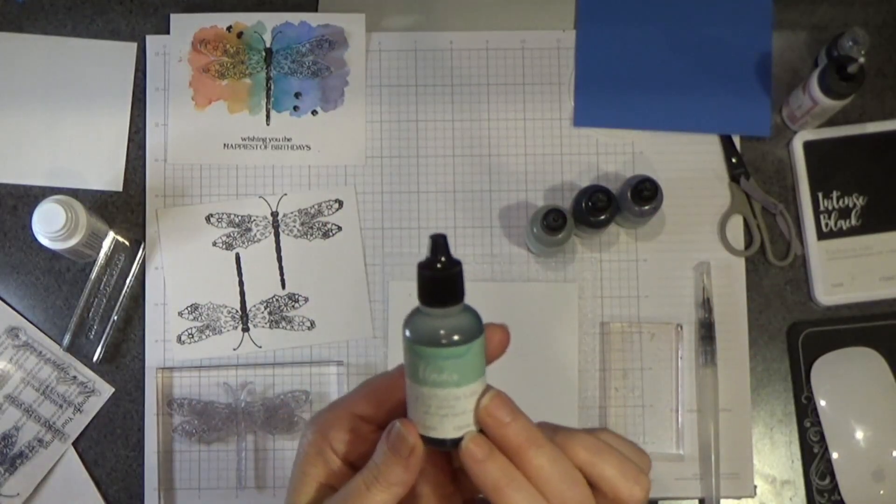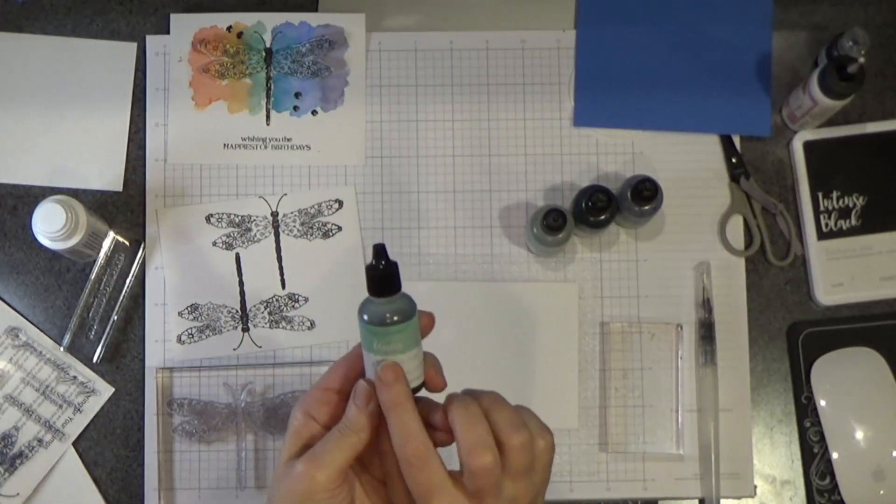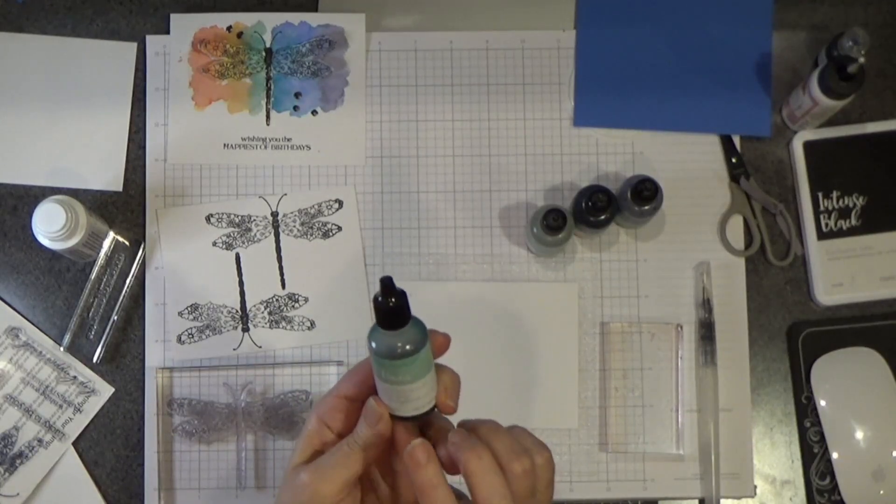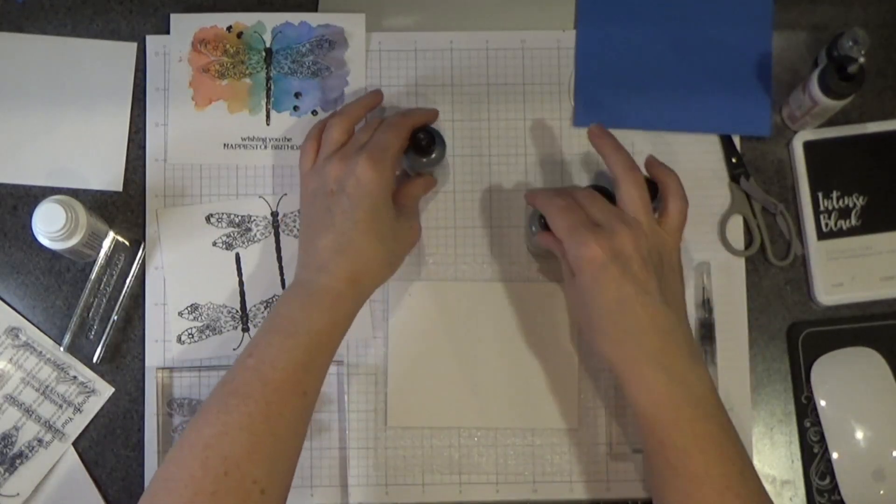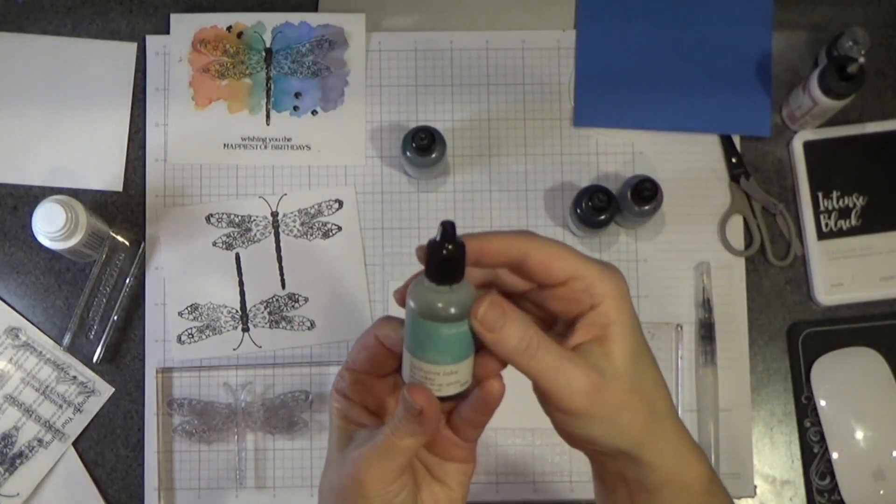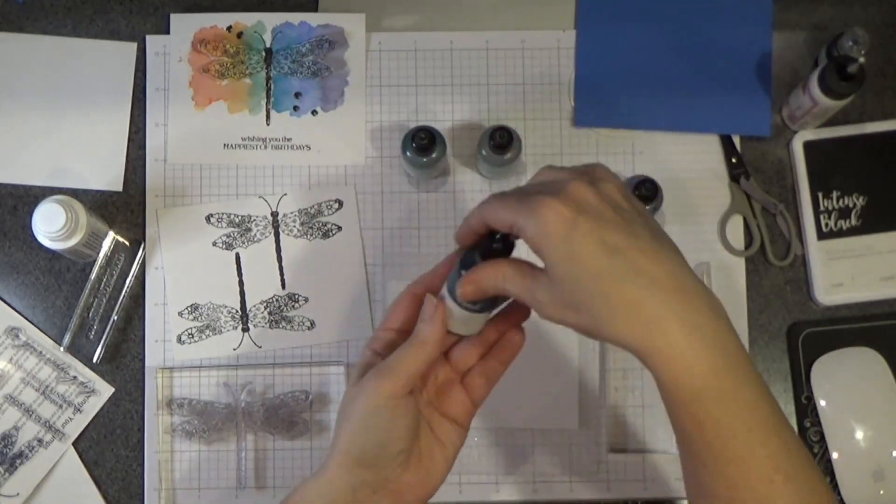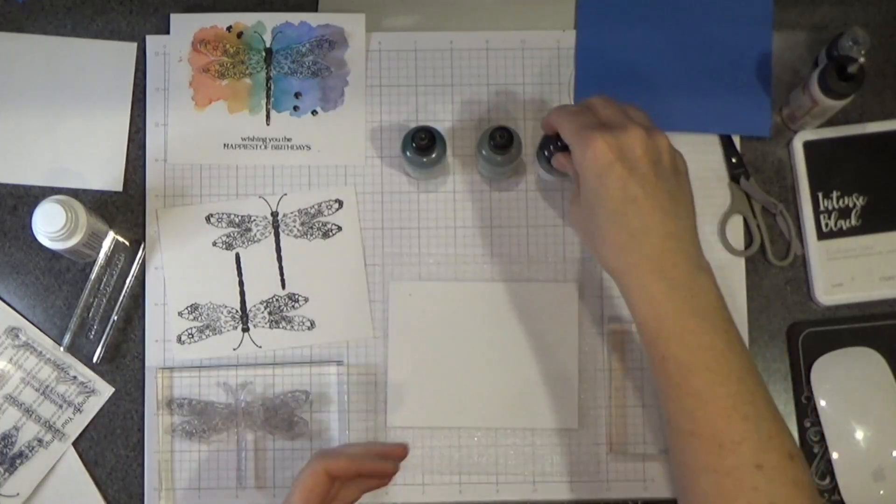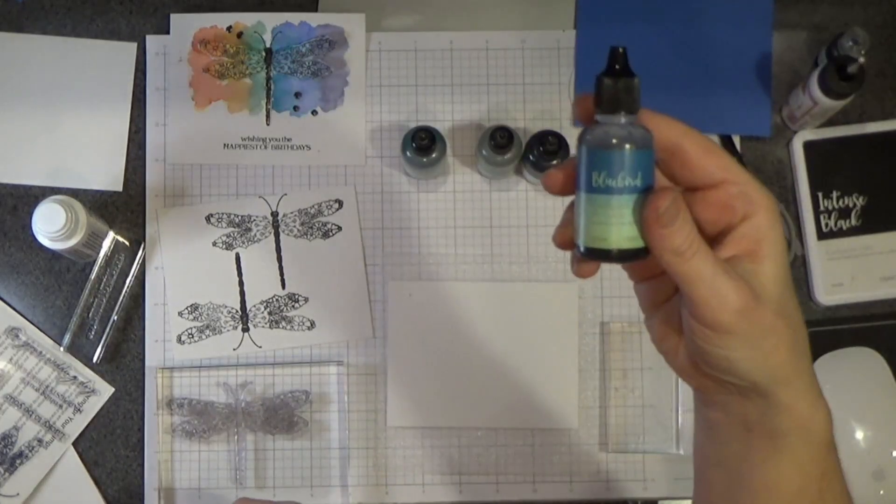I have re-inkers. These are Close To My Heart re-inkers that match our stamp pads. This is the glacier, lagoon, peacock, and bluebird.